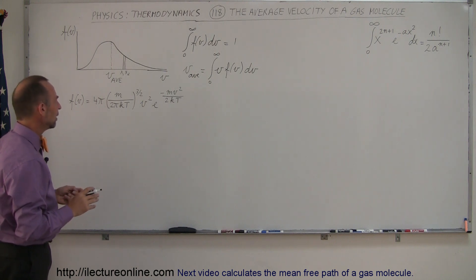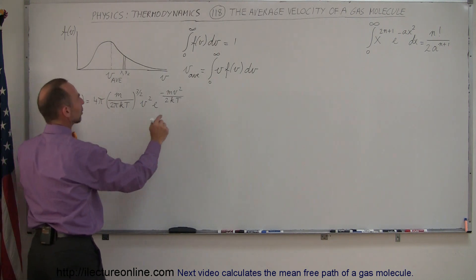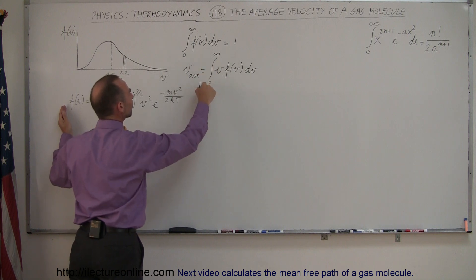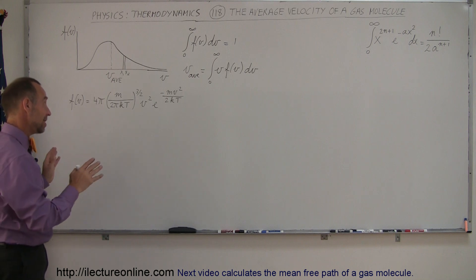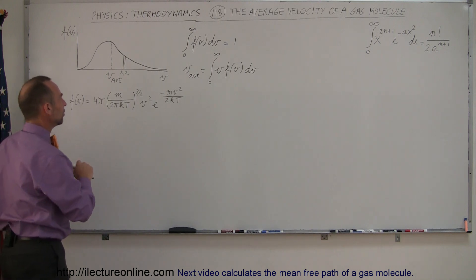So what I need to do is take this function, multiply it times V, integrate it from 0 to infinity, and I get the average velocity. Don't get scared yet, that's the mean equation, but actually there's a way in which we can make that a lot easier. So let's go ahead and do that.